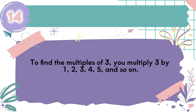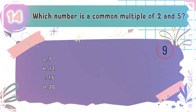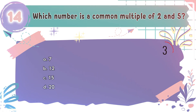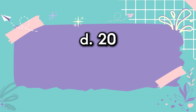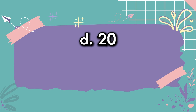Question number 14: Which number is a common multiple of 2 and 5? The choices are A: 7, B: 12, C: 15, D: 20. The correct answer is D, 20. Multiples of 2 are 2, 4, 6, 8, 10, 12, 14, 16, 18, 20, and so on. Multiples of 5 are 5, 10, 15, 20, and so on. 20 is in both lists.